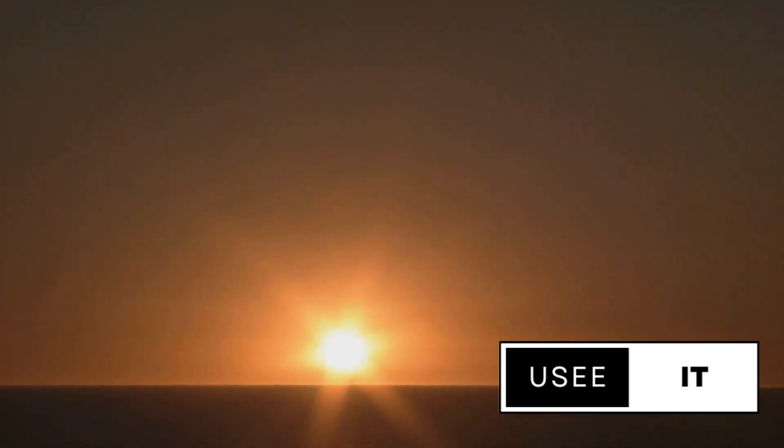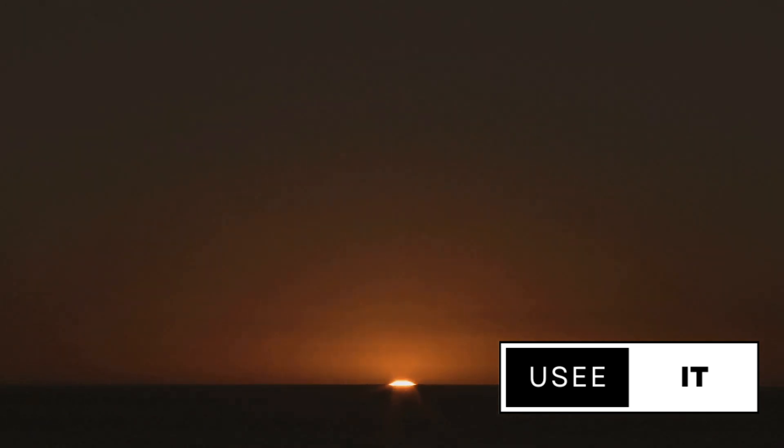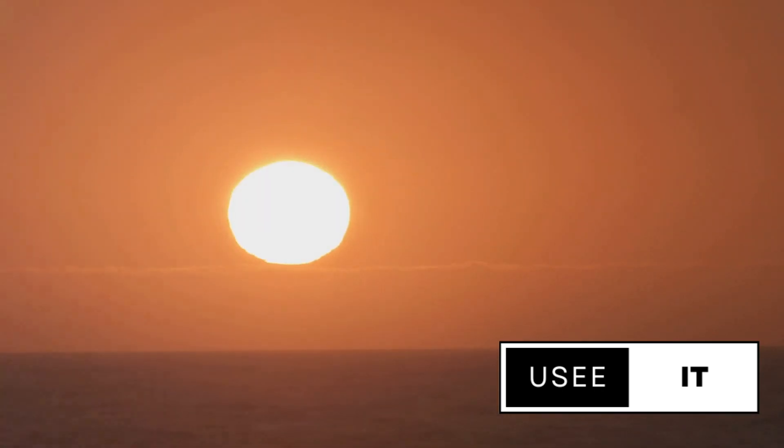They point to the perception of a flat horizon, asserting that if the Earth were truly round, wouldn't our view curve? They question the authenticity of images from space, arguing that there are no genuine pictures of our planet. Moreover, they suggest that Antarctica, rather than being a continent, is an ice wall encircling the Earth.